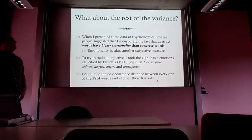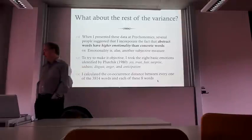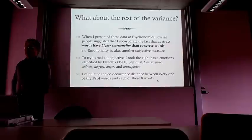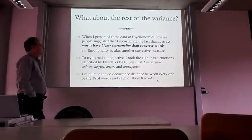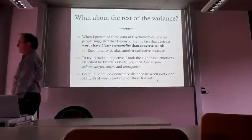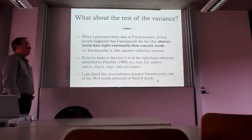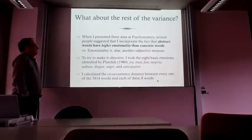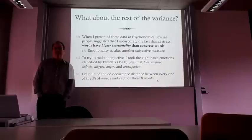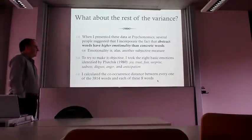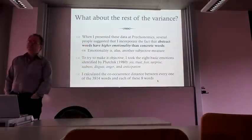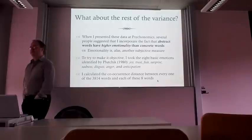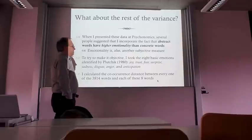I was pretty happy with that data, presented it at Psychonomics, and many people came up and said it was interesting but I should do something about emotionality—because there's evidence that abstract words have higher emotionality than concrete words. This was the beginning of my forays into emotionality. At the time I wasn't enthused, because the only way to measure emotionality was to get human judgments, and I thought we'd be explaining human judgments with other human judgments. But after a while, I thought maybe I could use co-occurrence models to get an objective measure of emotionality. At the time, I knew nothing about emotion, so I just went out and looked for a plausible model.